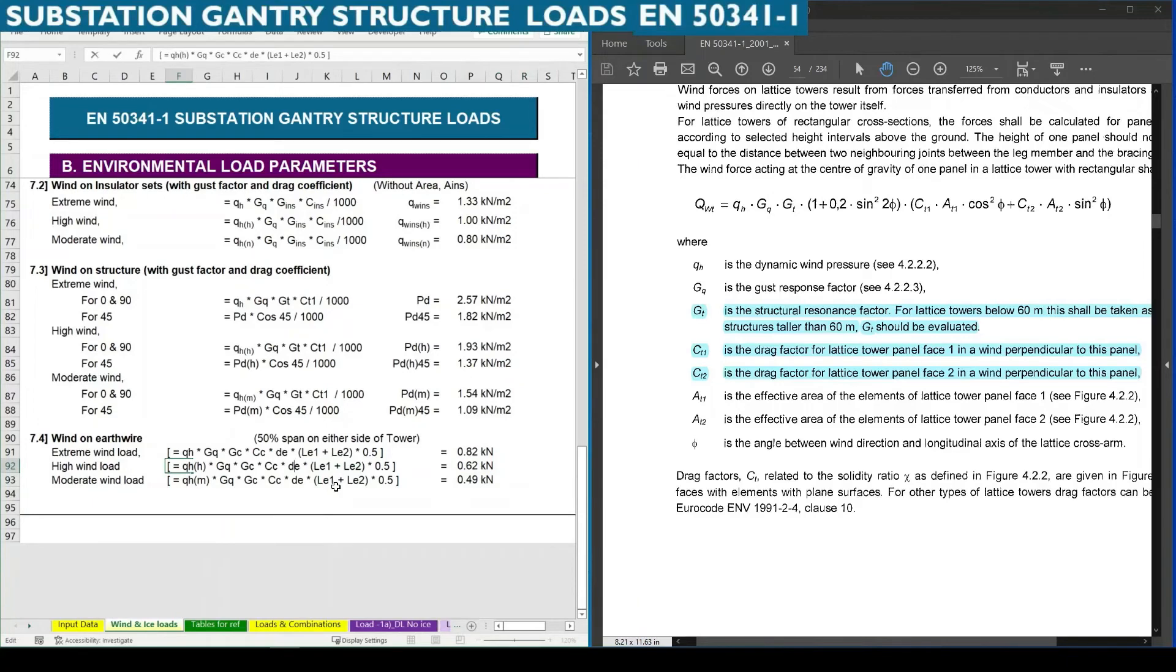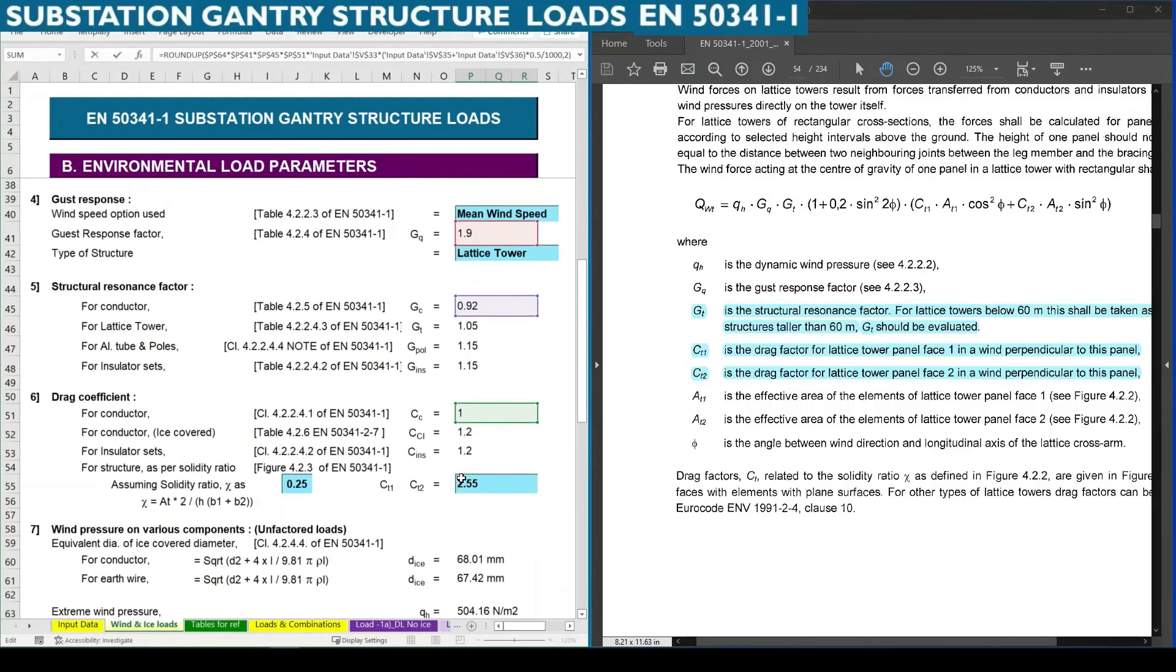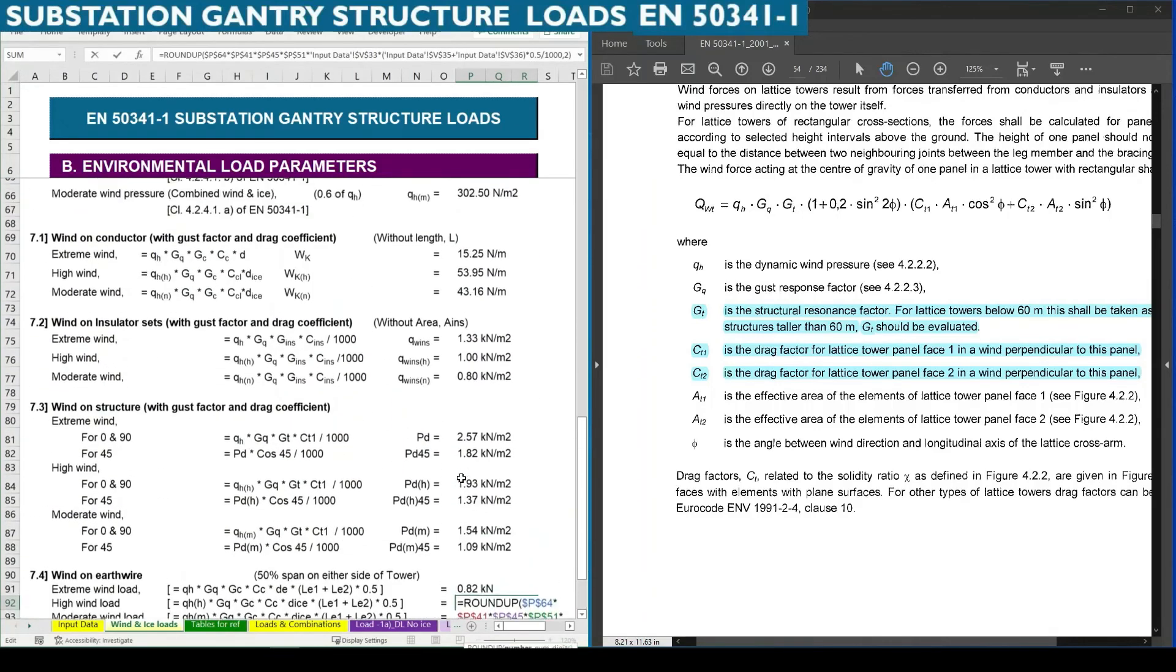Again for earth wire also we need to consider the conductor diameter in ice covered condition. So we need to change that to ice covered area for wind exposure. Here we need to consider the diameter in millimeter divided by 1000, so it is 2.79. Similarly for earth wire we need to consider the diameter of ice covered earth wire, which is 2.72 kN.